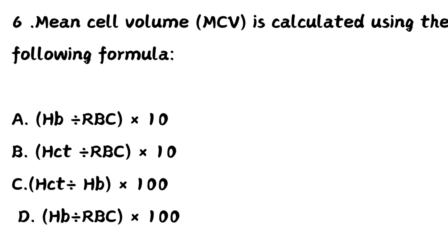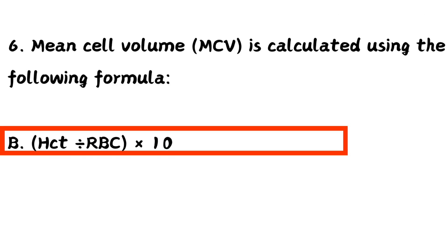Question number 6. Mean cell volume (MCV) is calculated using the following formula. Option A, hemoglobin divided by RBC into 10. Option B, hematocrit divided by RBC into 10. Option C, hematocrit divided by Hb into 100. Option D, Hb divided by RBC into 100. The right answer is Option B: hematocrit divided by RBC into 10.